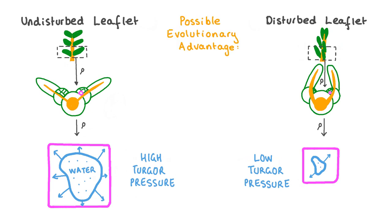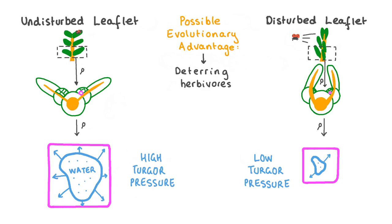Scientists have proposed that this thigmonastic response in mimosa may present an evolutionary advantage to the plant. Being touched or shaken may indicate that a herbivore is nearby, or that a herbivorous insect like a ladybug has landed on the leaflet and is about to eat it. Closing the leaflets quickly and drooping may make the plant appear smaller and more wilted to large herbivores, and may dislodge smaller herbivores like insects, preventing the plant from being eaten.